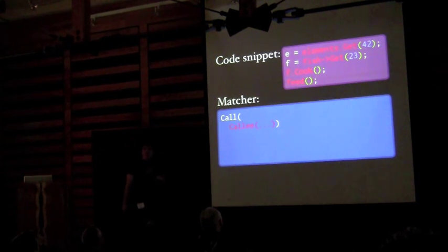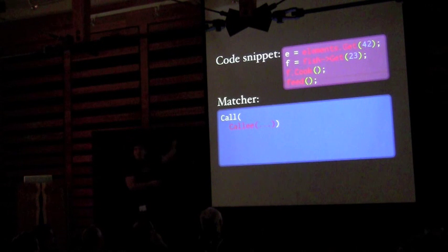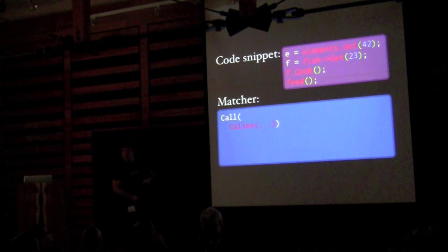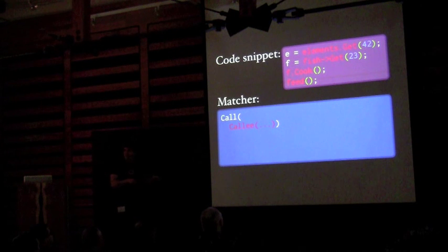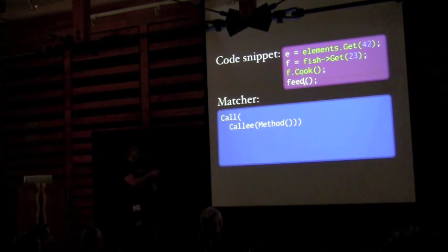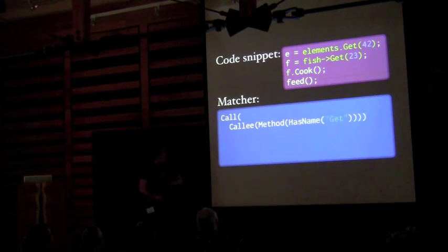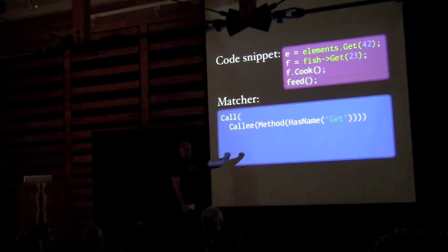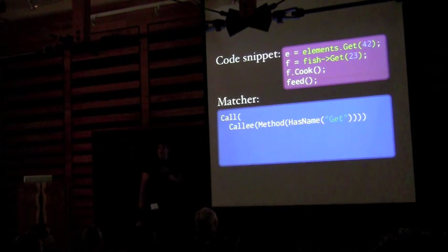We need to restrict further. We narrow the domain of our predicate to the callee — this allows us to write more predicates about that component of what we've matched. Now we can add a predicate: the callee has to be a method, not just a function. Immediately the global function falls out of the set of matched entities — now we're only matching methods. Let's add another predicate: it's not just any method, but a method with a particular name, `get`. Now we've narrowed it a bit further, closing in on the one thing we want.